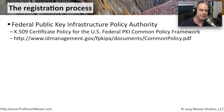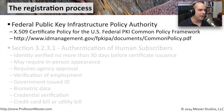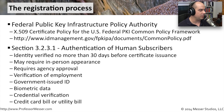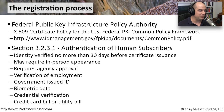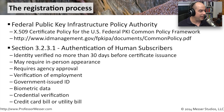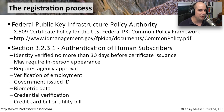If you go to Section 3.2.3.1, the authentication of human subscribers, you can see what is required. You may have to have your identity verified no more than 30 days before a certificate is issued. You will need agency approval, it may require in-person appearance, verification of employment, your government ID, and it may also require biometric data.